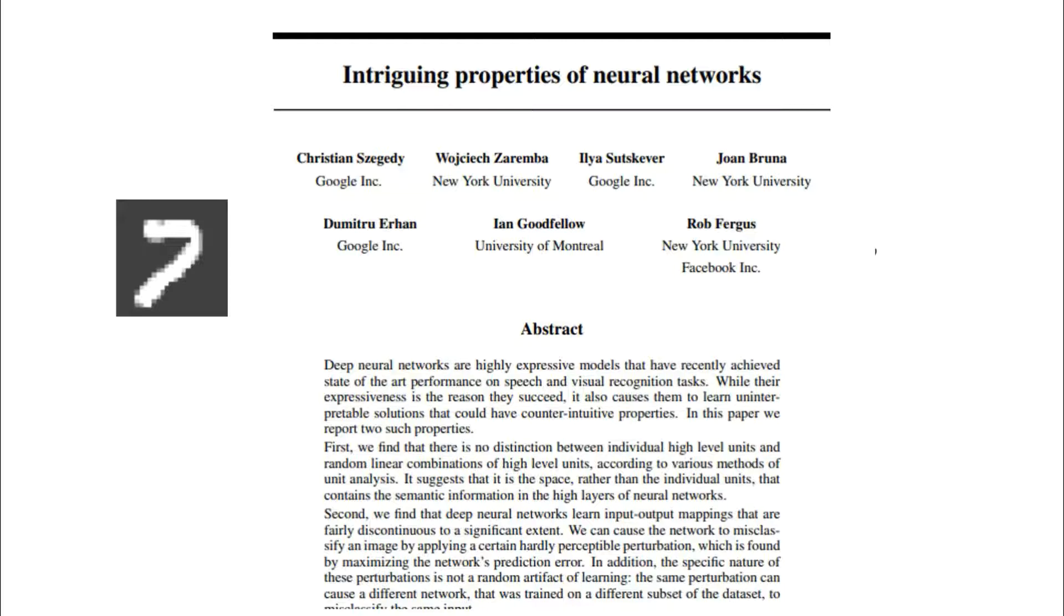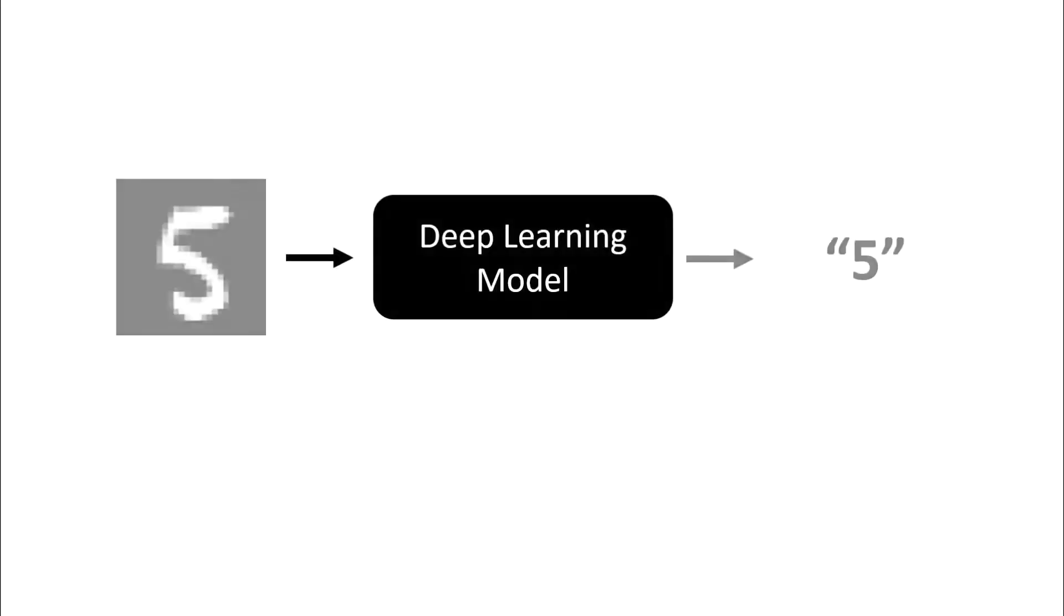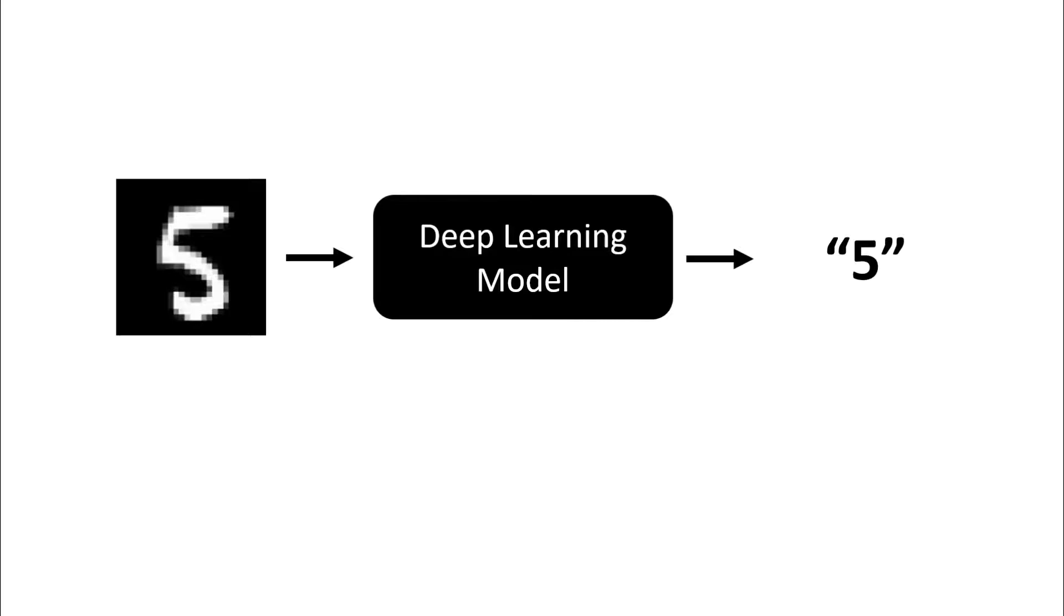So let's visualize an attack. Usually the system can correctly classify an image of a five as a five. However, an adversary may be able to identify a very specific pattern, a noise, to adjust each pixel of the image slightly.